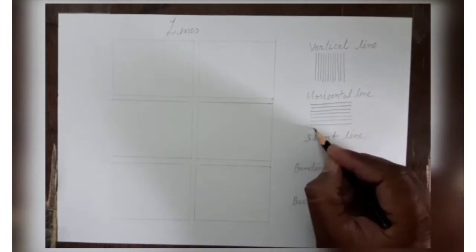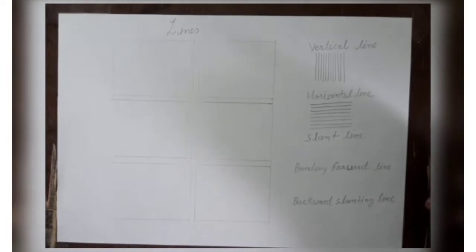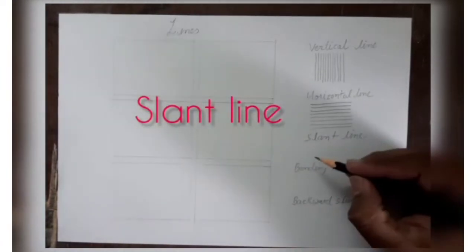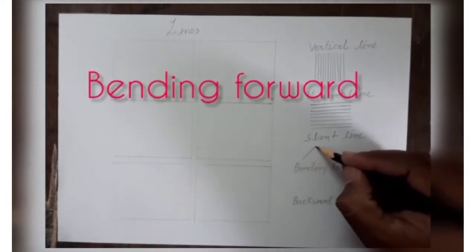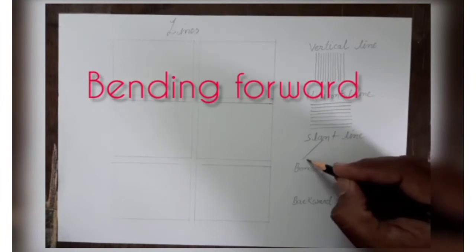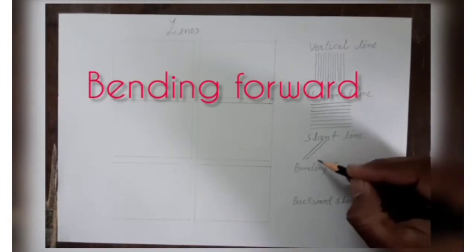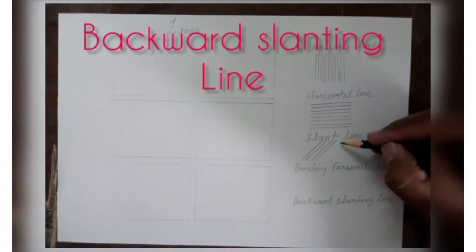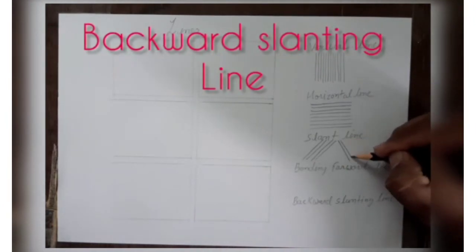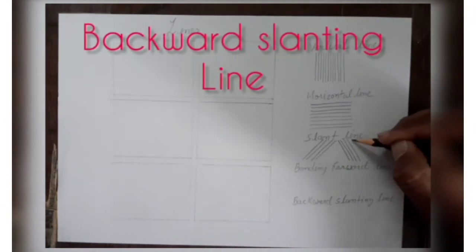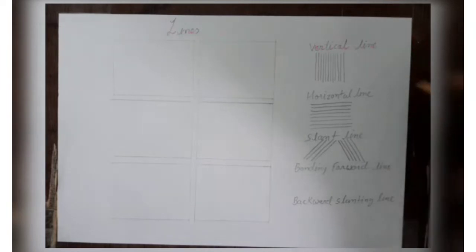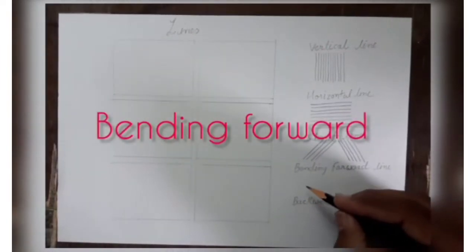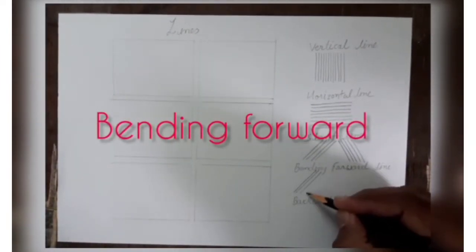Like this we have to draw horizontal line. Now it's time to draw slanting line. First, bending forward — like this, bending forward. Then backward slanting — this is called backward slanting line. Let me show you again: bending forward, like this we have to draw this line.